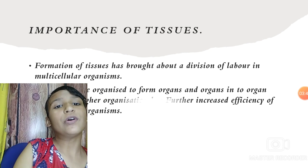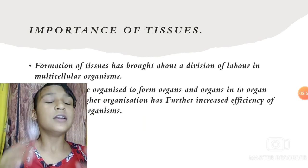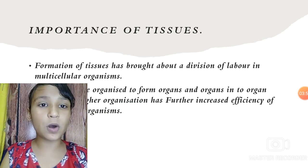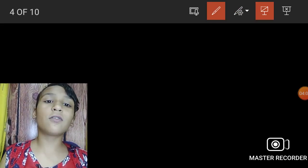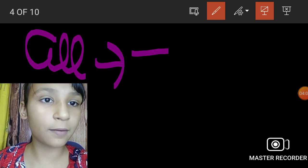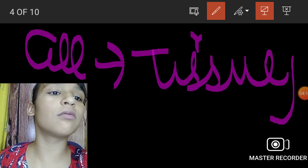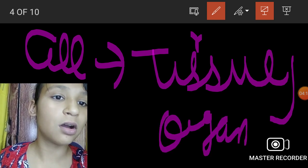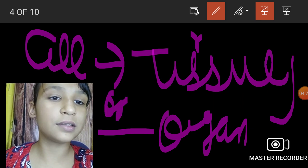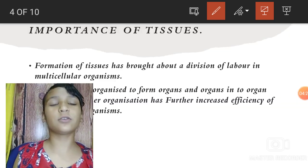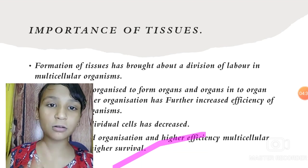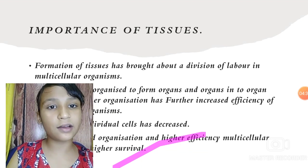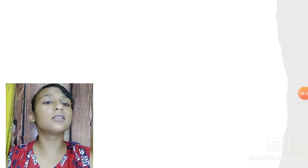The importance of tissue: tissue brings division of labor in multicellular organisms. Tissues combine to form organs, organs into organ systems, and organ systems into organisms. So the hierarchy is: cell → tissue → organ → organ system → organism. The workload of individual cells is decreased because of this division among many tissues.